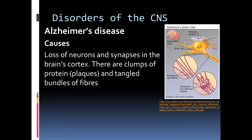One disorder of the central nervous system is Alzheimer's disease. The cause is the loss of neurons and synapses in the brain cortex. There are clumps of protein called plaques that form around the nerve tissue as tangled bundles of fibers. A normal axon should look smooth, but in Alzheimer's it gets tangled up.